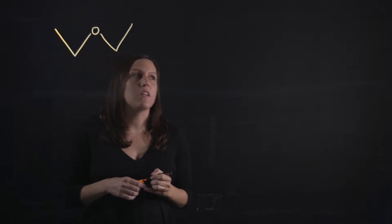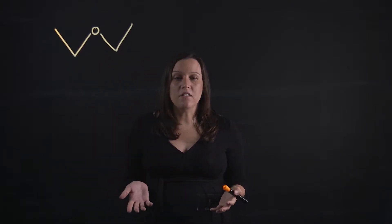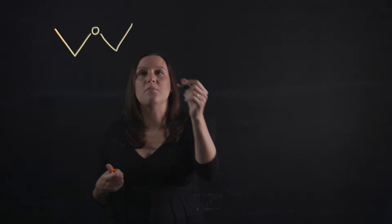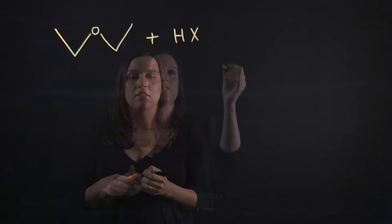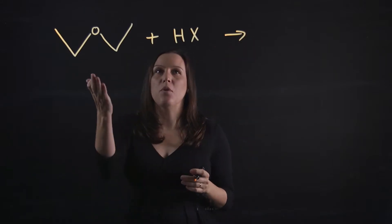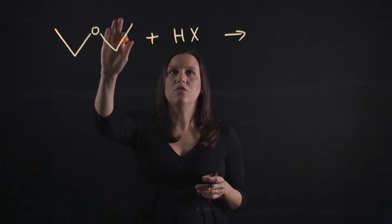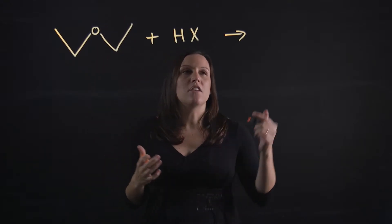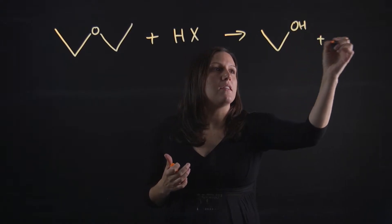something that looks like this. Ether cleavages are done under acidic conditions. An example of an acid is HX. When it's exposed, one side will get an OH added to it and the other side would get an X. If it's symmetrical, it doesn't really matter which side you write them on because it's